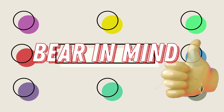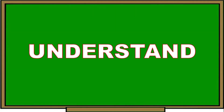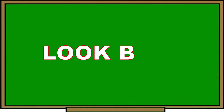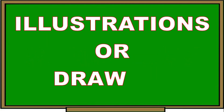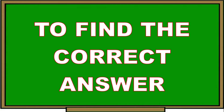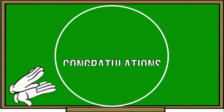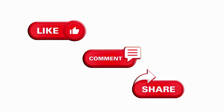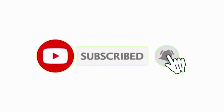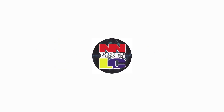Did you get the correct answers? Great job! Remember: in solving word problems involving area, follow the 4-step plan — understand, plan, solve, and look back. Use the appropriate formula, strategy, illustrations, or drawing to find the answer. Congratulations! You completed the lesson this quarter. Please like, comment, and share our videos. Don't forget to subscribe and click the notification bell for more videos. Thank you!